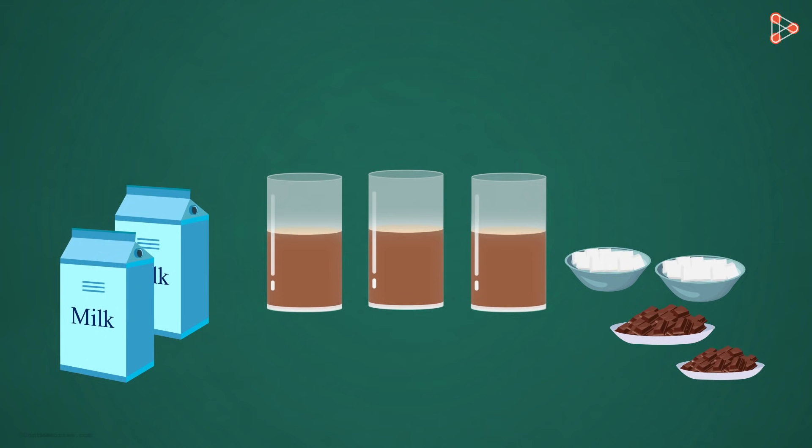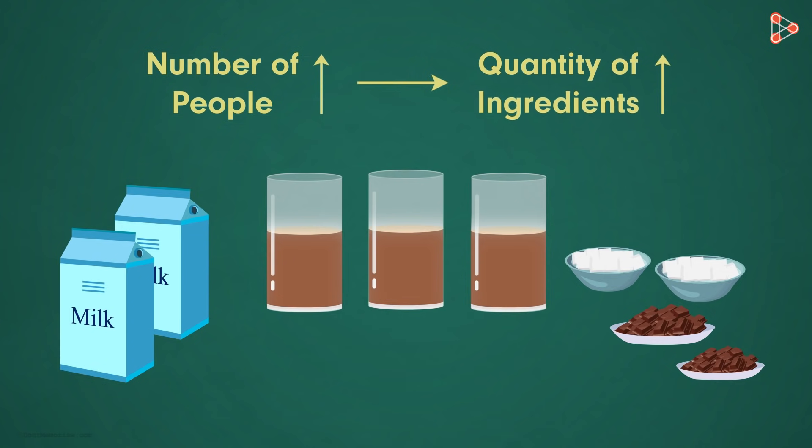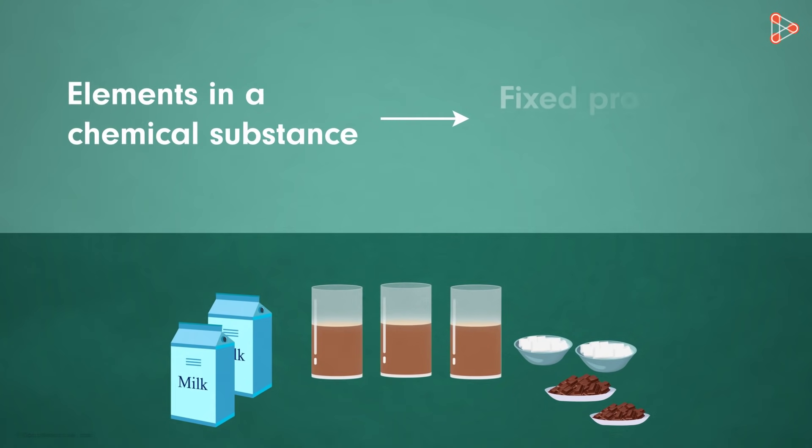It means that when we have to make the drink for 10 people instead of 5, we just have to take double the amount of ingredients, right? Anything more or less would result in change of taste. Similarly, in any chemical substance, the elements present are always in a fixed proportion by mass.